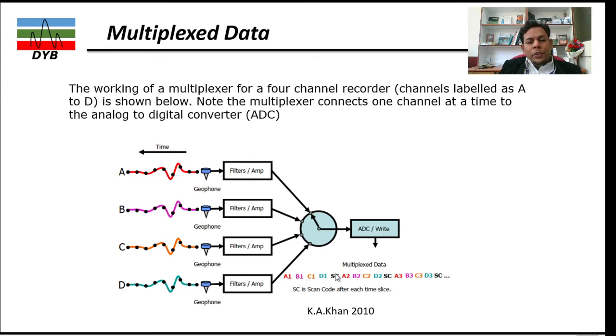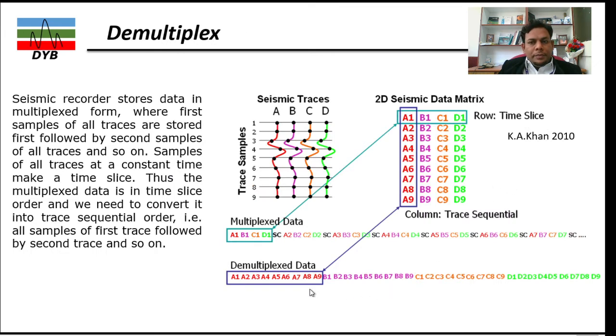Then there is a scan code which will be recorded. Then again, it will continue with A2, then B2, C2 and D2. This will go on like this. But this recording is called your time slice. The seismic trace is like this: seismic trace A, seismic trace B, seismic trace C and D. But when it records in multiplex format, it will be recorded in a row format: A1, B1, C1, D1.